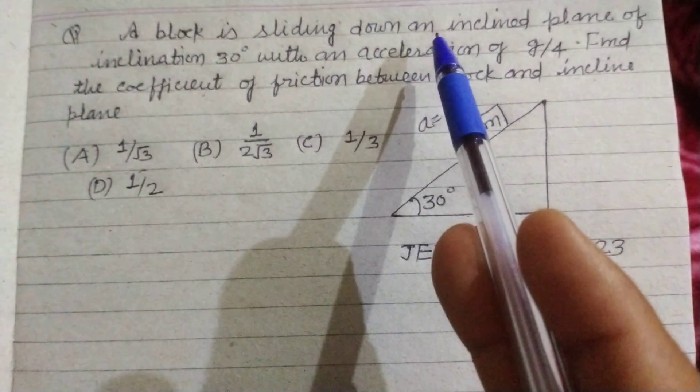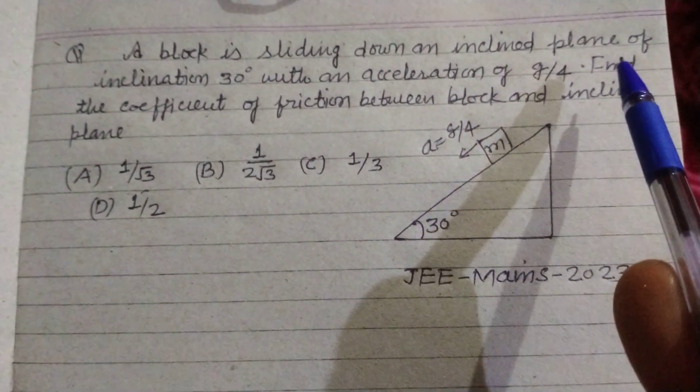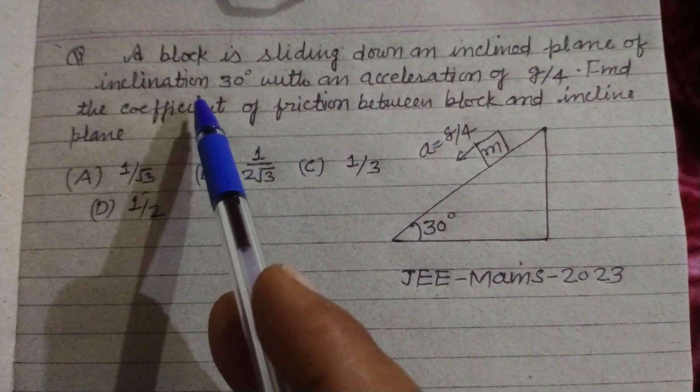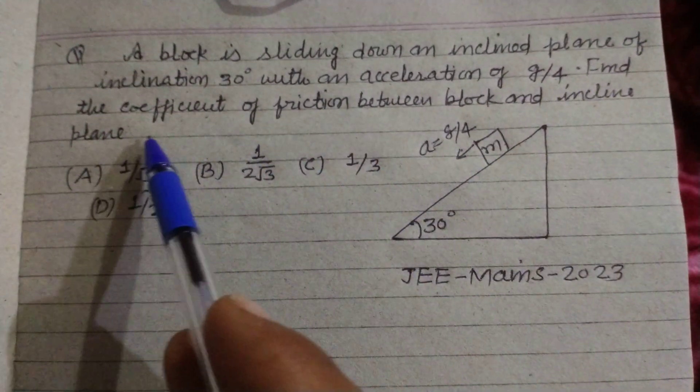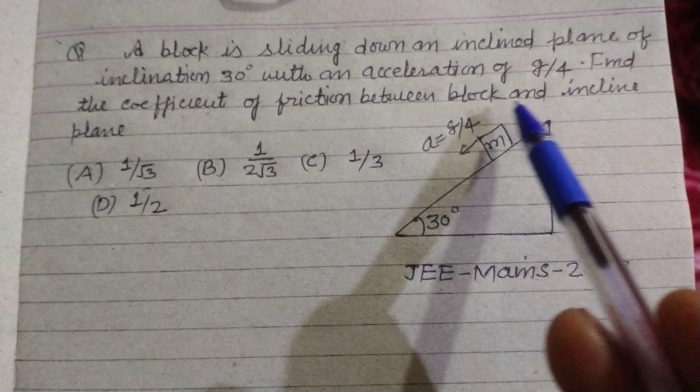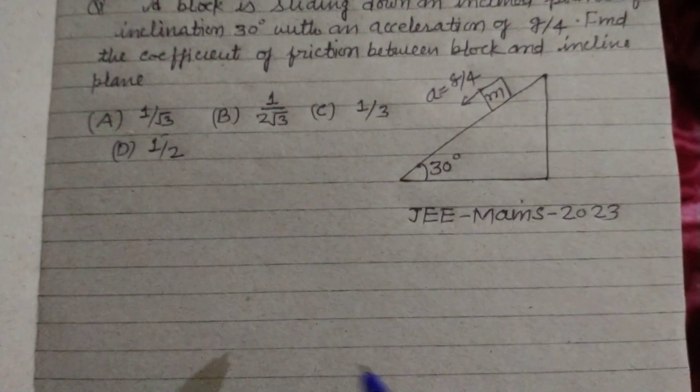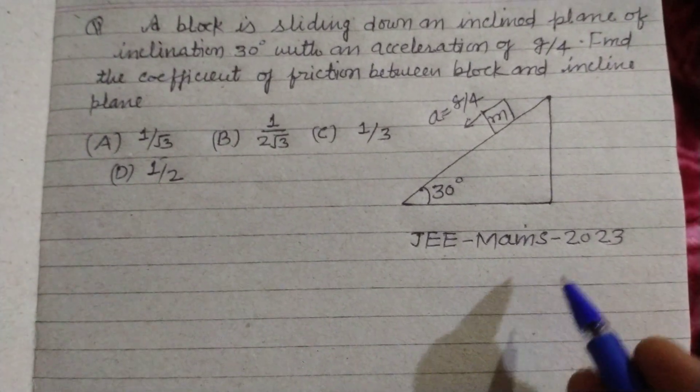A block is sliding down an inclined plane of inclination 30° with an acceleration of g/4. Find the coefficient of friction between block and inclined plane. This problem was asked in JEE-Mains 2023.